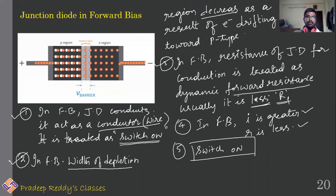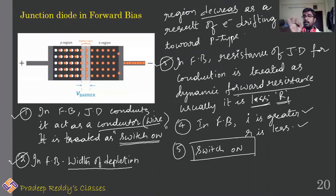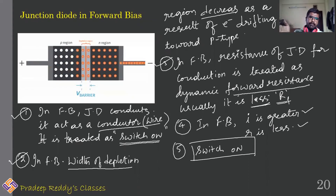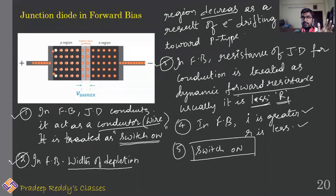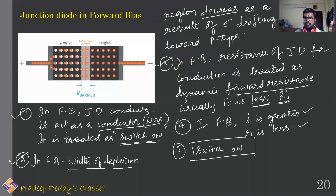In forward bias, the total number of charge carriers remains the same — the law of conservation of charge is valid. Electrons from the n-region shift towards the p-region and are carried forward by the battery, which replenishes them back into the n-type. It is just the transfer of electrons within the whole circuit. When electrons move freely within the junction diode, it is in the switch-on condition, and junction diodes are used as electronic switches in many electronic circuits.